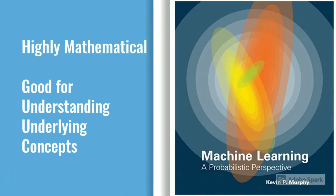अब बढ़ते हैं इस sequence में चौथे बुक की तरफ। ये बुक है Machine Learning: A Probabilistic Perspective by Kevin P. Murphy. A very good book for machine learning researchers. इस बुक में सारे mathematical concepts details में समझाया गया है — बहुत ही भारी बुक है, which is good for knowing the mathematical concepts behind the scenes। मैं suggest करूंगा: use this book as a reference book and don't study it end-to-end. Use it to understand concepts as and when required — suppose अगर आपको logistic regression समझना हो तो go to that chapter and read the part which describes logistic regression.